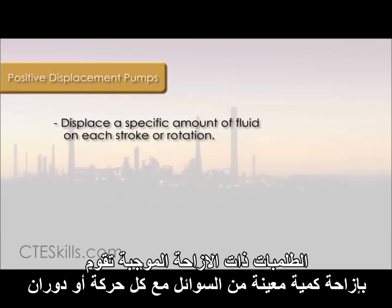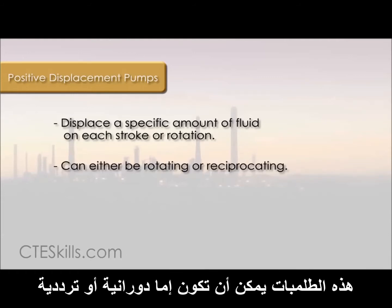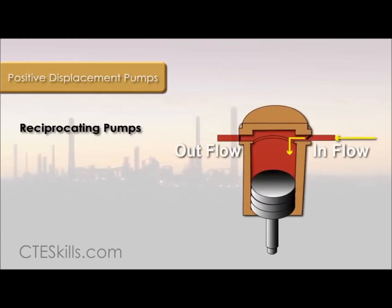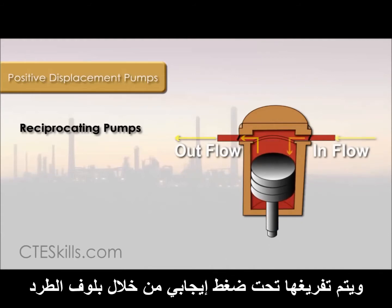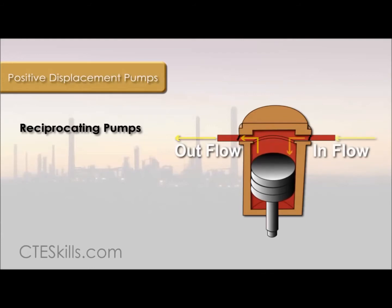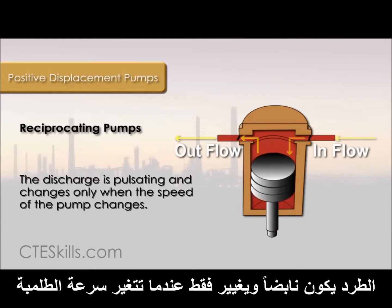Positive displacement pumps displace a specific amount of fluid on each stroke or rotation. These pumps can either be rotating or reciprocating. In a reciprocating pump, a volume of liquid is drawn into the cylinder through the suction valve on the stroke and is discharged under positive pressure through the outlet valves on the discharge stroke. The discharge is pulsating and changes only when the speed of the pump changes.